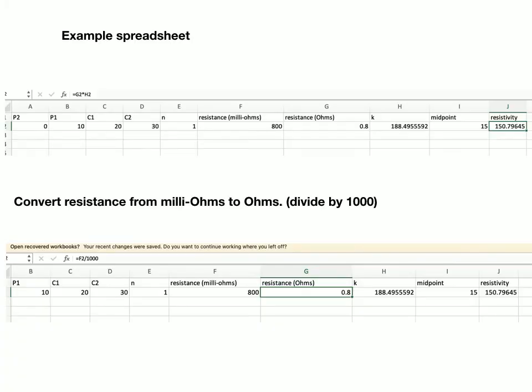Right, so when you have your data, you'll notice in the field notes you wrote down where the two potential electrodes were, 0 and 10 metres in this case, where the two current electrodes were, 20 and 30 metres in this case, what n was.